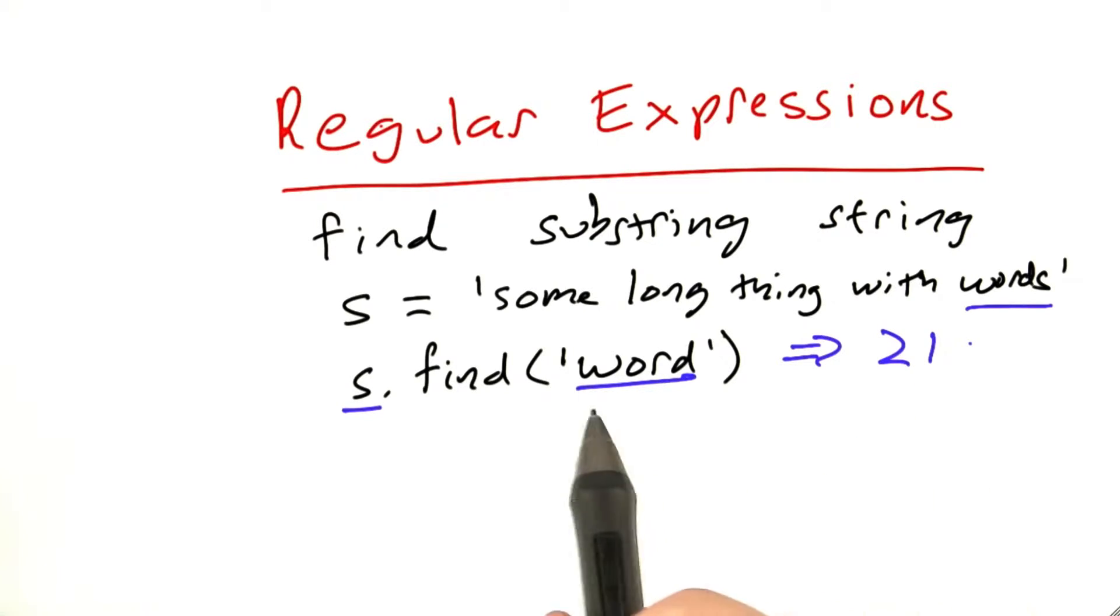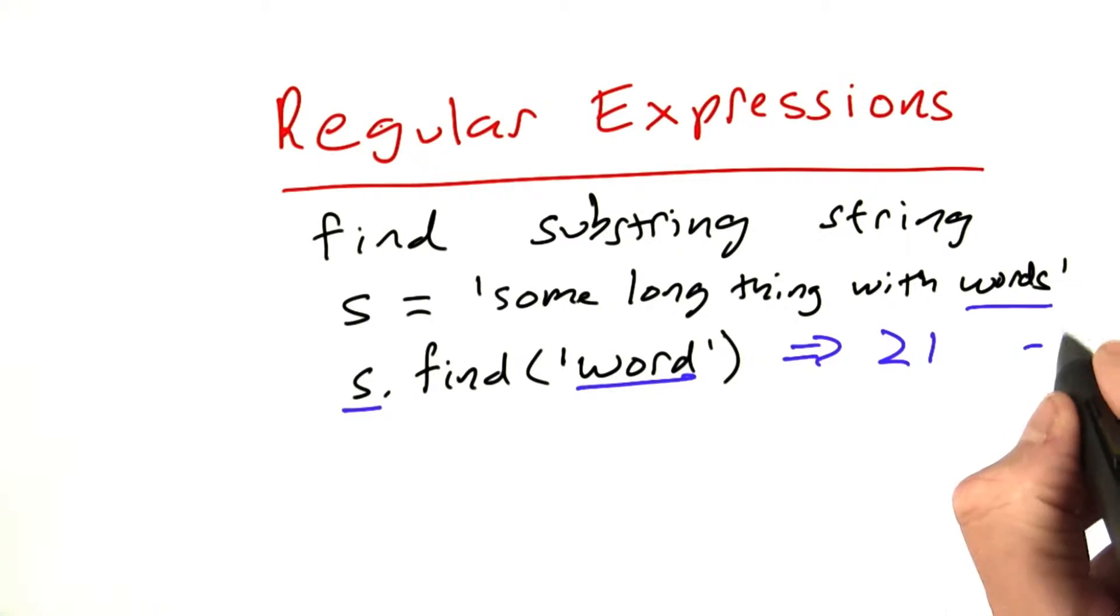And if it didn't exist at all, then by convention it would return minus 1 to indicate failure because minus 1 is not a valid index.